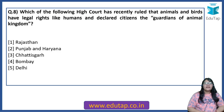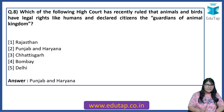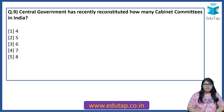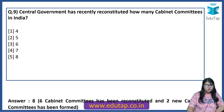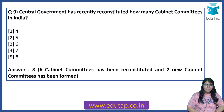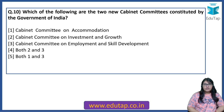Which of the following High Courts has recently ruled that animals and birds have legal rights like humans and declared citizens the guardians of the animal kingdom? The answer is Punjab and Haryana High Court. The Central Government has recently reconstituted how many cabinet committees in India? 6 were reconstituted and 2 new committees were formed — 8 in total.